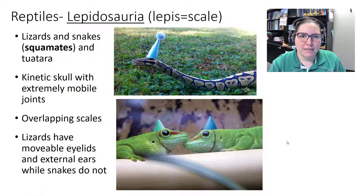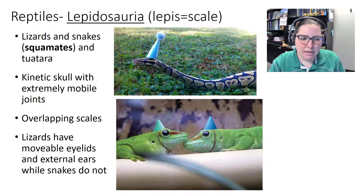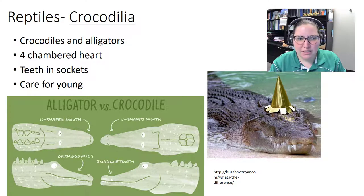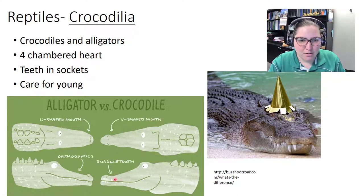Lepidosauria — 'lepis' meaning scale — includes lizards and snakes (squamates) and the tuatara found in New Zealand. They have extremely mobile jaw joints and overlapping scales. Lizards have movable eyelids and external ears; snakes do not. Crocodilia — crocodiles and alligators — have a four-chambered heart, teeth set in sockets, and provide parental care of their young.